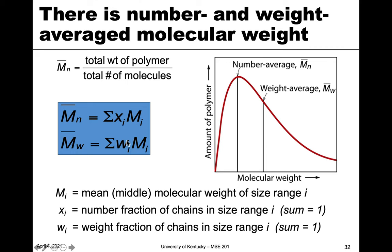The only difference with the weight-averaged molecular weight is that we swap out the number fraction x_i for the weight fraction w_i in each size range. Both the x_i values and the w_i values must each sum to one across all ranges — that's a good check for your calculations.